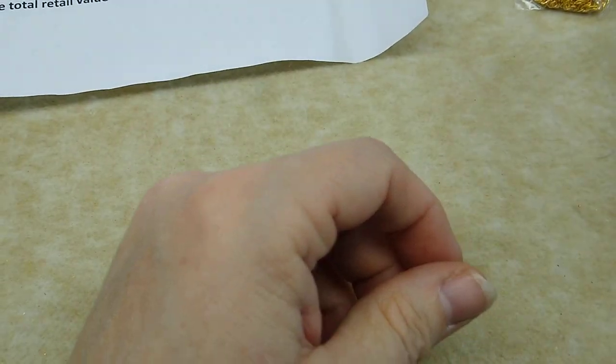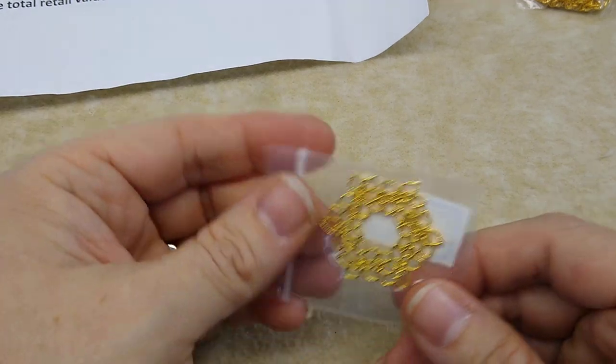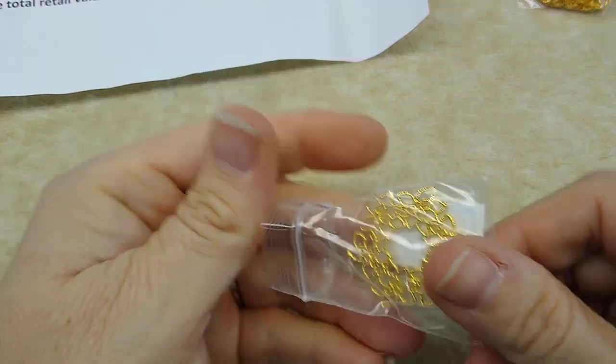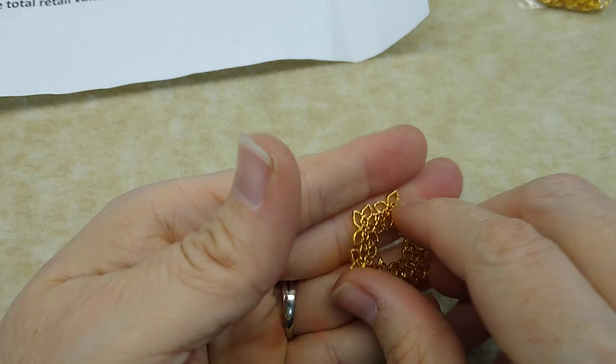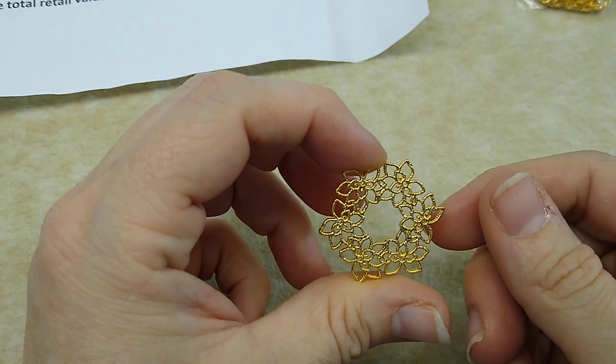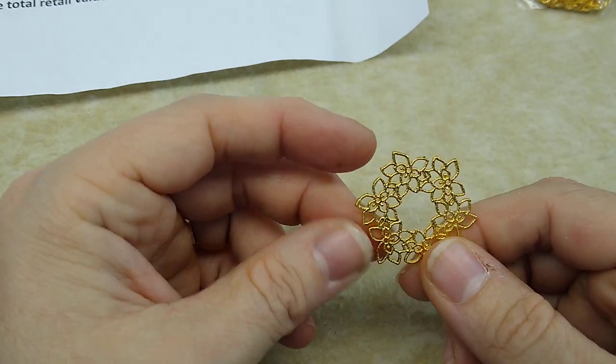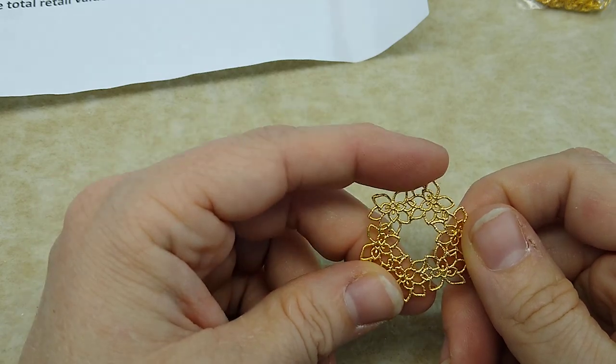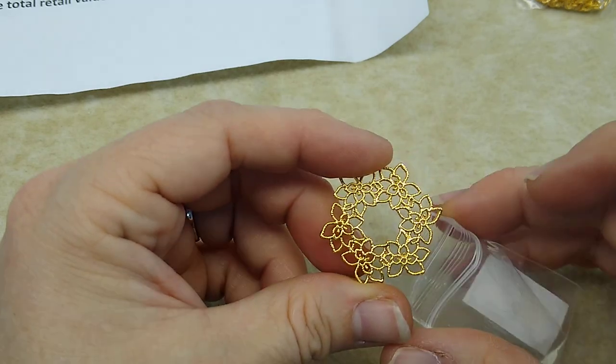Number eight, 31 by 27 millimeter, fancy filigree, filigree brass wreath pendant. Oh, okay. Ooh, this is pretty too. Look at this. Huh? That is really cute. How different. I like that a lot. That's very pretty.